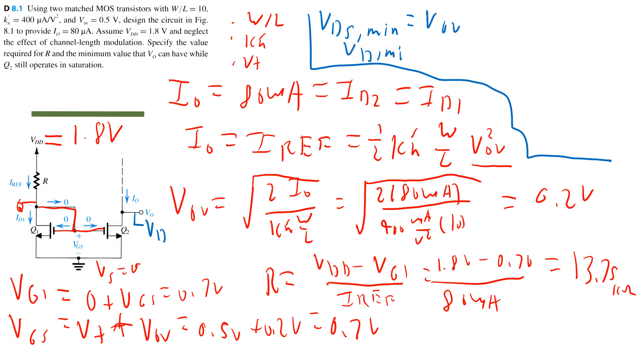we can just say that the voltage at the drain, the minimum, which is equal to Vout minimum, is simply equal to V overdrive, or 0.2 volts. So the minimum value at Vout is 0.2 volts in order for this transistor to operate in saturation.